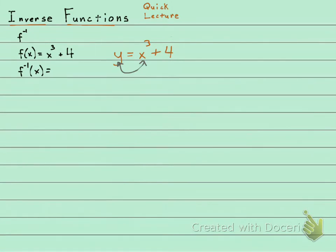Any x's turn to y's, any y's turn to x's. So you would have x equals y to the third plus 4, and then you would follow the steps to solve for y. This isn't a video on how to do that, it's just to explain what it is. So the inverse of x would be the cubed root of x minus 4.